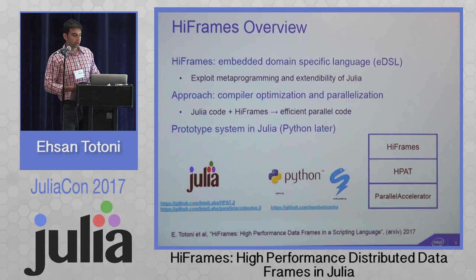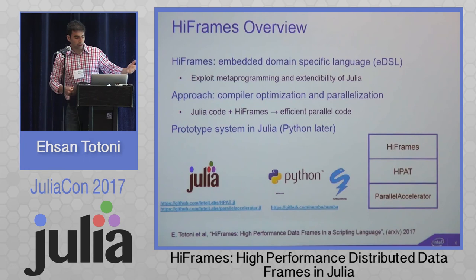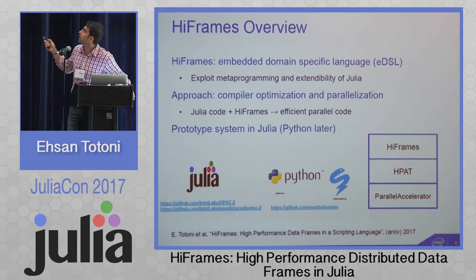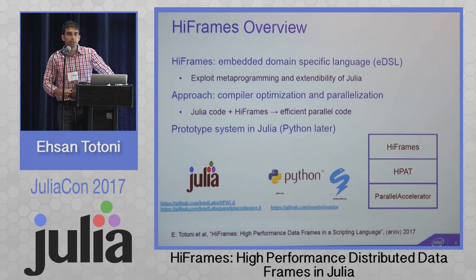We have a prototype system in Julia, currently inside the HPAT package, and we want to extract it to its own package later. We also plan to build a Python prototype for comparison. All our systems are available online — parallel accelerator, HPAT, and everything else. On the Python side, we are building on top of the Numba JIT compiler. We have a paper on arXiv with more details of this HiFrames system and this new approach to data frames.